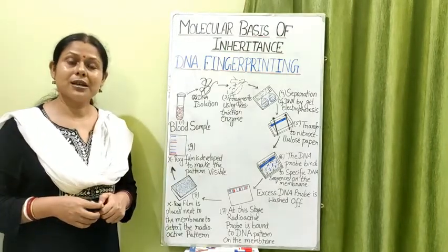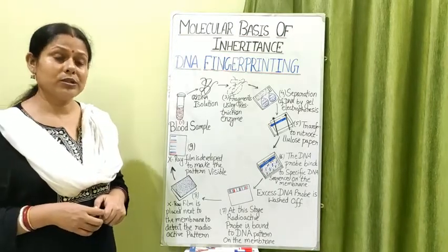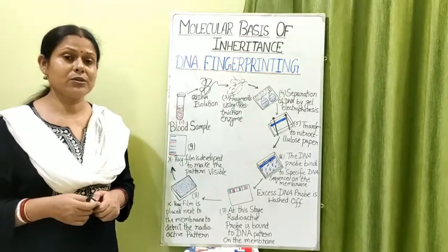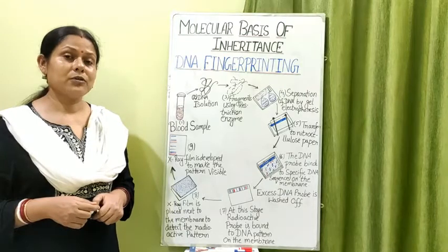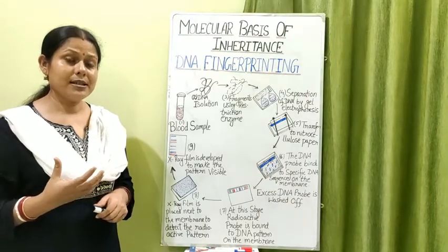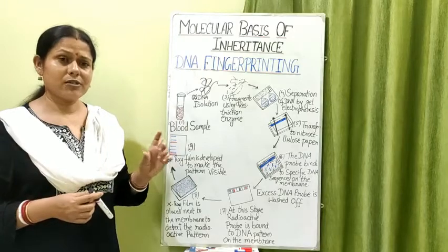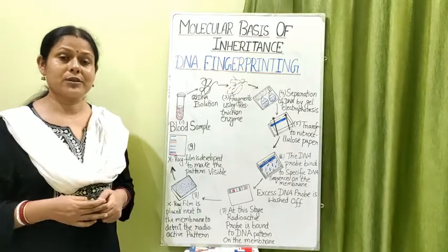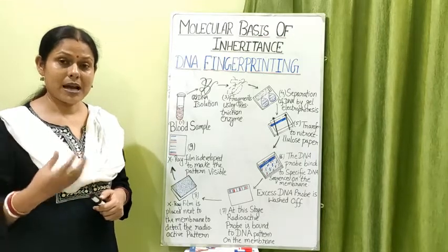DNA fingerprinting has many more applications. It is not limited to human beings — it can be done with other organisms as well. For human beings, DNA fingerprinting may also provide better understanding of genetic disorders by identifying polymorphisms shown in the DNA banding pattern of a person suffering from any kind of genetic disorder, enabling genetic identification and guiding treatment.